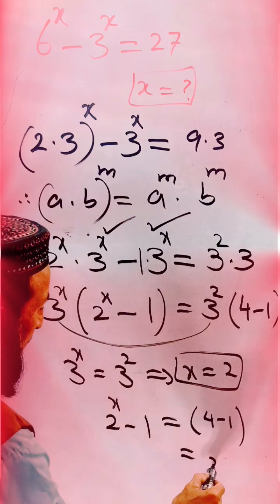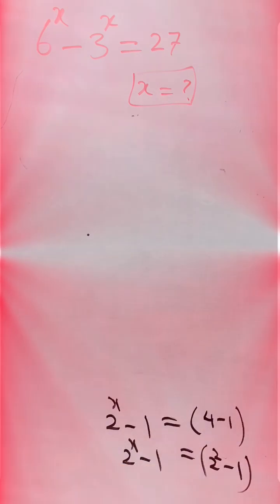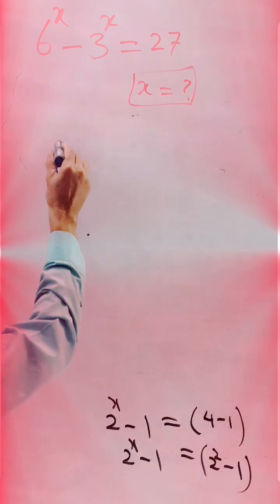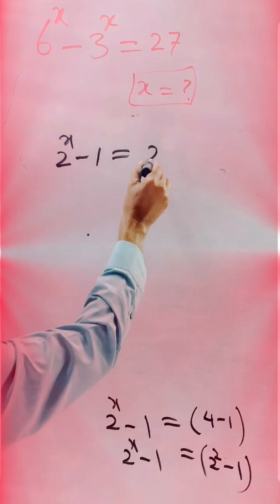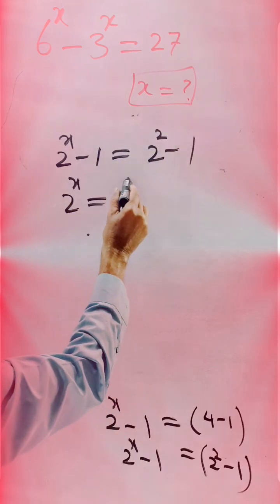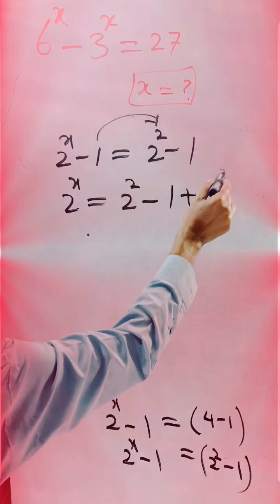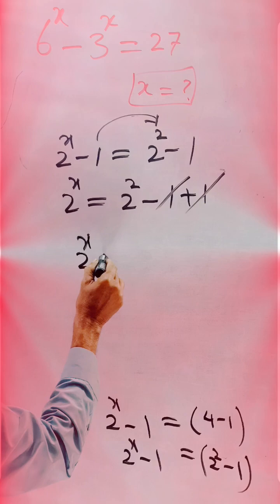And 4 - 1 we can write as 2 square minus 1. 2^x - 1, 2 exponent of 2 minus 1. If we transfer this result plus 1, both are cancelled.